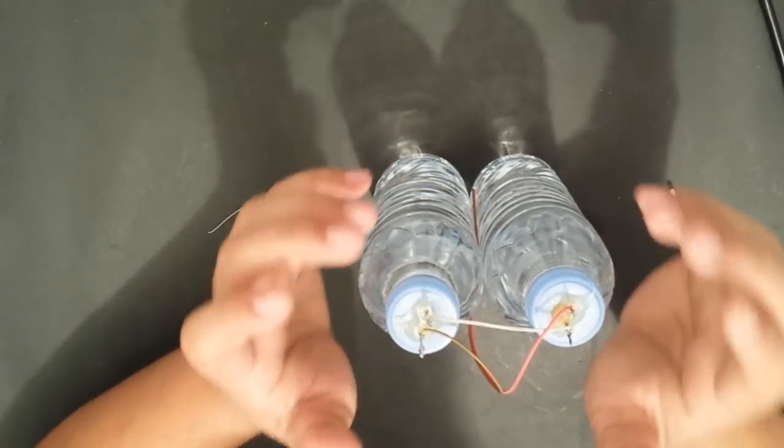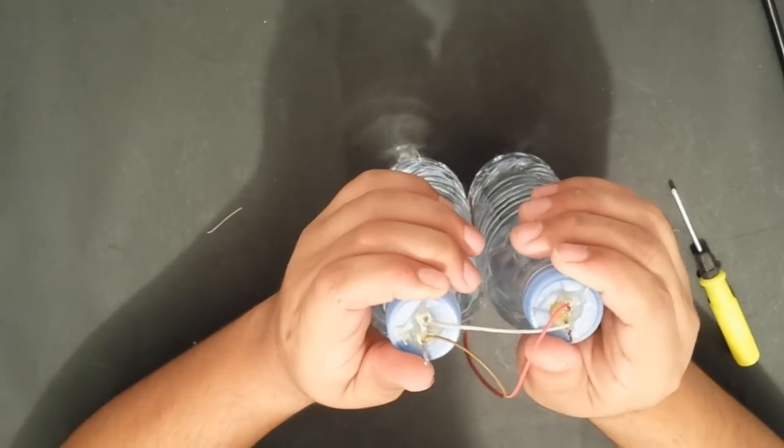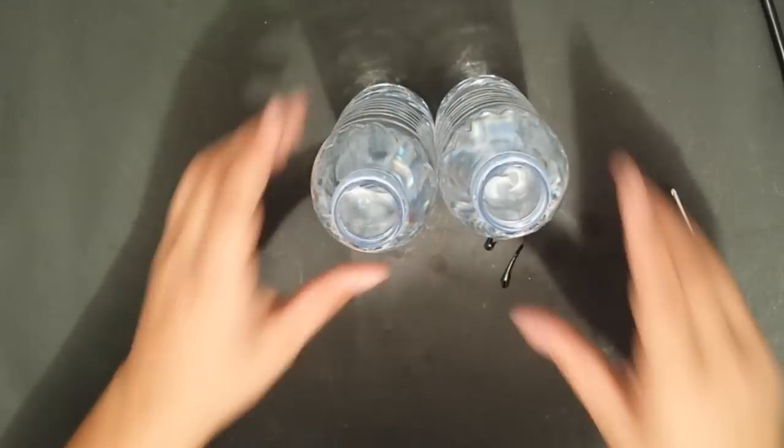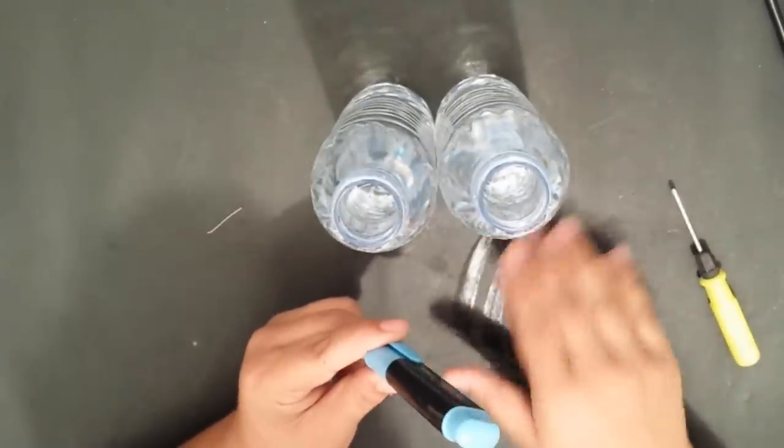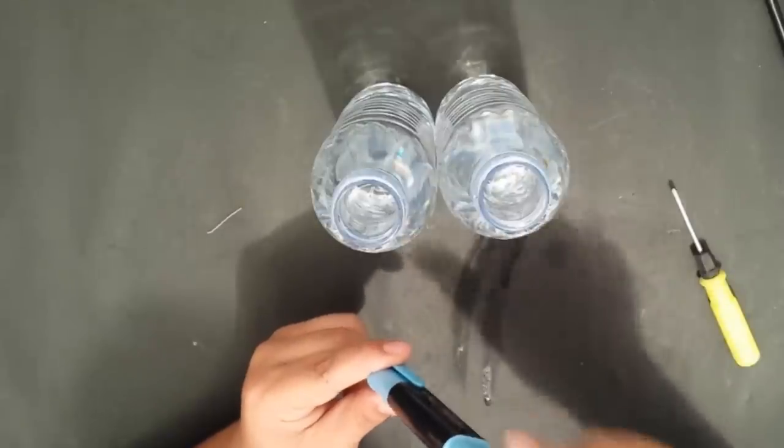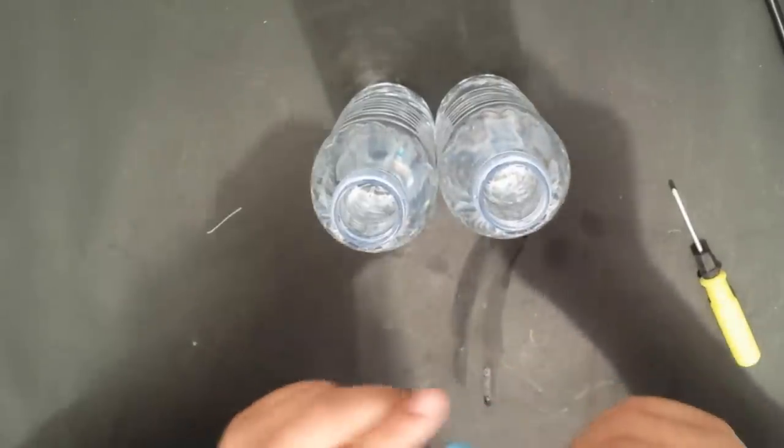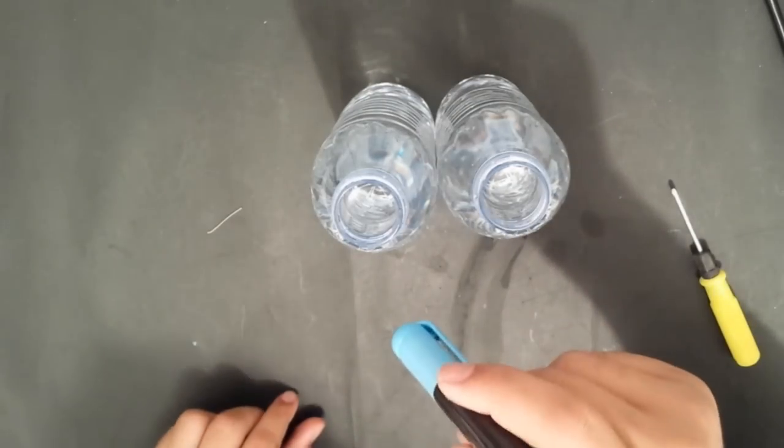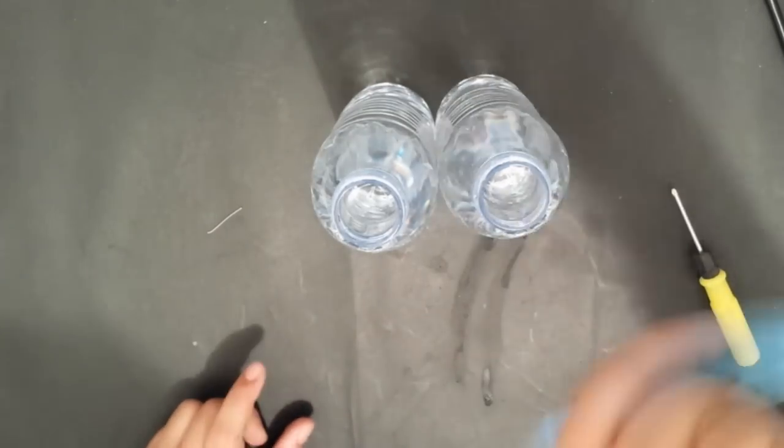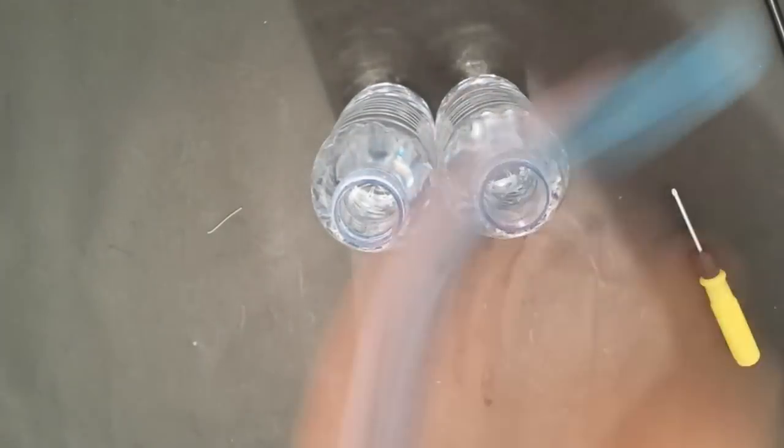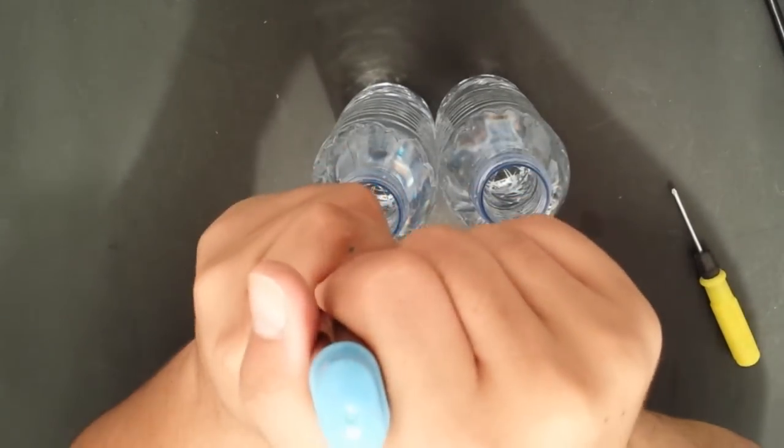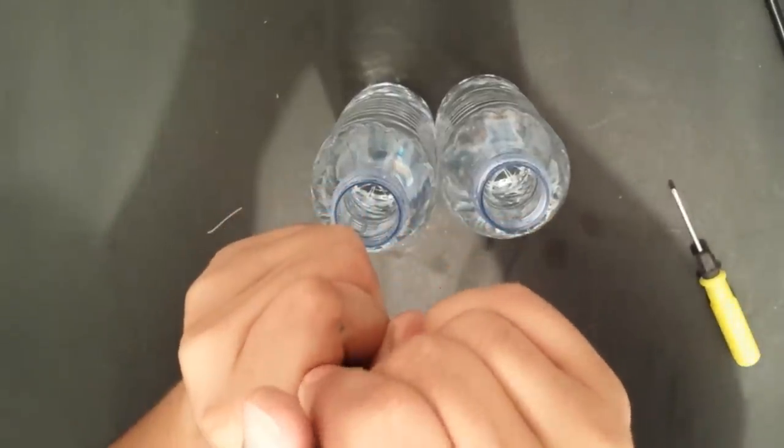So now the LEDs are ready. Now it's time to add some color to the water. So let's do that. To do this, I will be using the highlighter fluid inside of these highlighters. And to extract that fluid, I will be shaking the highlighters as hard as I can, and then some highlighter fluid will go into the cap which I will then pour into the water bottle. So let's do that. Let's be very careful while opening the top because the highlighter fluid might come flying out.